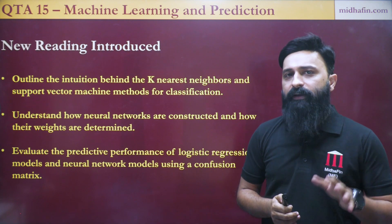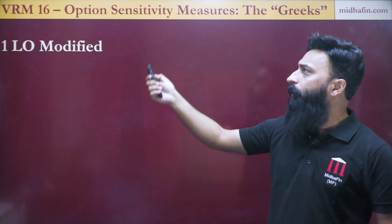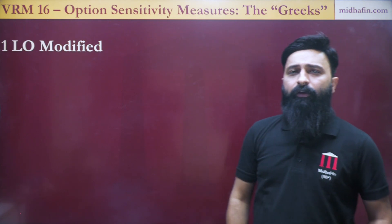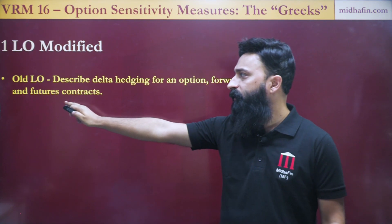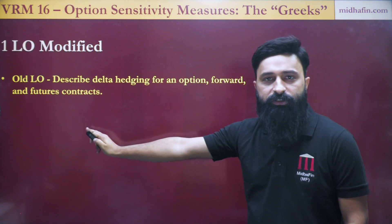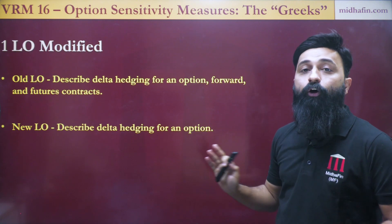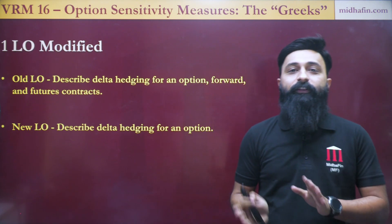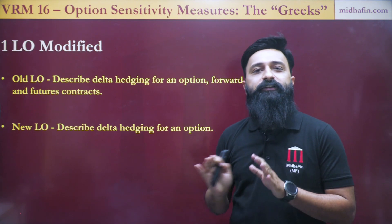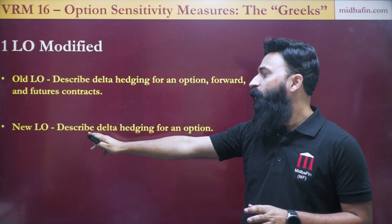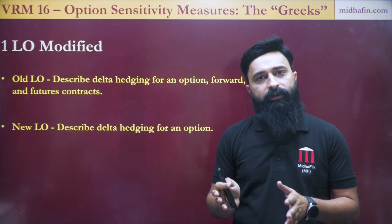The final change in FRM Part 1 is in chapter VRM 16, Option Sensitivity Measures — the Greeks — where one learning objective has been modified. The old learning objective was to describe delta hedging for an option, forward and futures contracts. The new learning objective is describing the delta hedging of an option only. Interestingly, the content remains the same; if you compare it with the 2022 GARP book, the curriculum has not changed. Earlier also, only delta hedging for an option was discussed, so they have rephrased the learning objective to make it consistent with the curriculum.